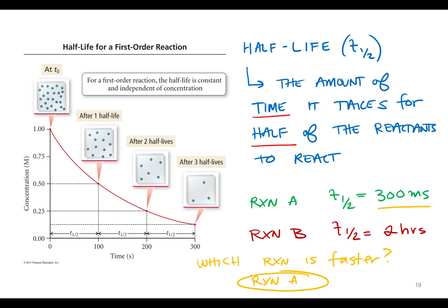B would be more stable. It's staying around for a lot longer. A is going away, so it's probably really unstable, reacting very quickly. Reaction B, whatever B is, would be more stable.